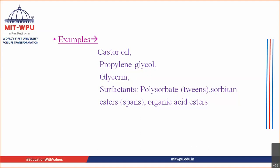Examples of plasticizers: castor oil, and all that ends with '-ol' — propylene glycol, glycerin (also known as glycerol), and polyethylene glycol (PEG). Also surfactants such as polysorbates (known as Tweens) and sorbitan esters (known as Spans), and some organic acid esters. The most important are propylene glycol, glycerol, and polyethylene glycol.